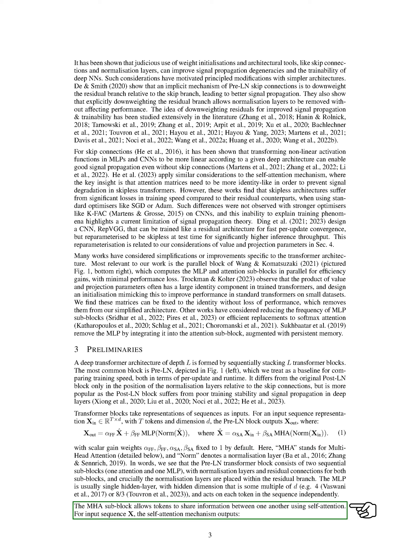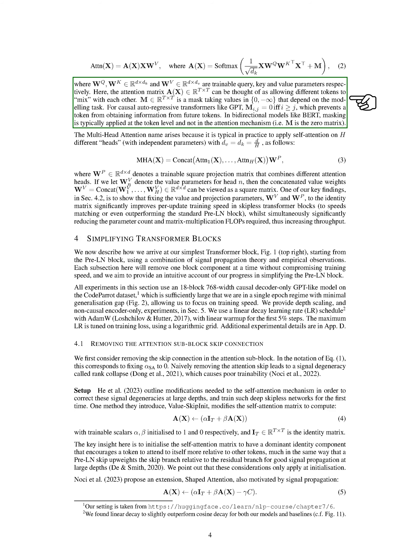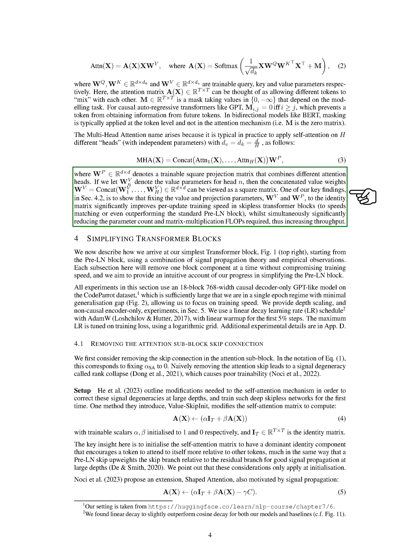The MHA operation allows tokens to share information with each other using a self-attention mechanism. This mechanism calculates an attention matrix, which can be thought of as a way for different tokens to interact with each other. There's also a mask involved in this process, which can limit the information a token can access based on the task at hand. For instance, in a GPT transformer, a token can't access information from future tokens. The term multi-head attention comes from the practice of applying self-attention on multiple different heads, each with independent parameters. These heads are then combined using a trainable square projection matrix. One of our key findings is that if we fix certain parameters to the identity matrix, we can significantly improve the speed of training in transformer blocks without skip connections.